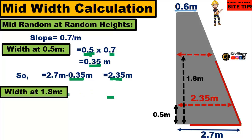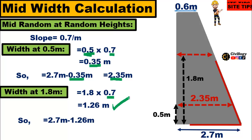Similarly, if you want to calculate the width at 1.8 meter height, we will use the same method: multiply the slope of 0.7 by 1.8 meters, which is the height from the base of the toe wall, giving a factor of 1.26 meters. By subtracting this from the base of the toe wall of 2.7, we get the width at 1.8 meters, which is 1.44 meters. That is how you can calculate the width at any random height.